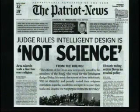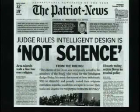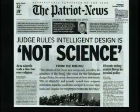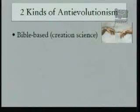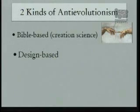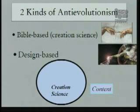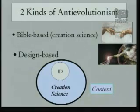I want to talk tonight about intelligent design, but in order to understand intelligent design, you really need to know something about creationism in general in the United States. As I will try to demonstrate, intelligent design is a descendant with modification of an earlier form of creationism called creation science. There are two kinds of anti-evolutionism in the United States today: the Bible-based or creation science variety, and the intelligent design variety. In content, intelligent design is merely a subset of creation science — everything you encounter in intelligent design creationism is found in creation science.